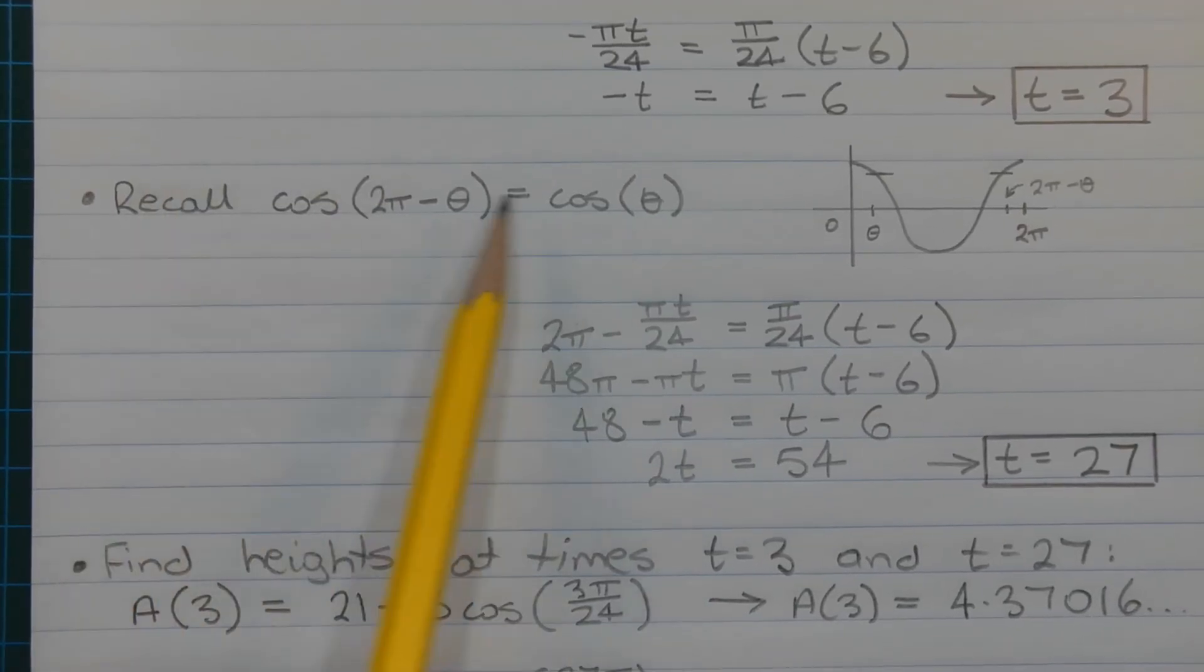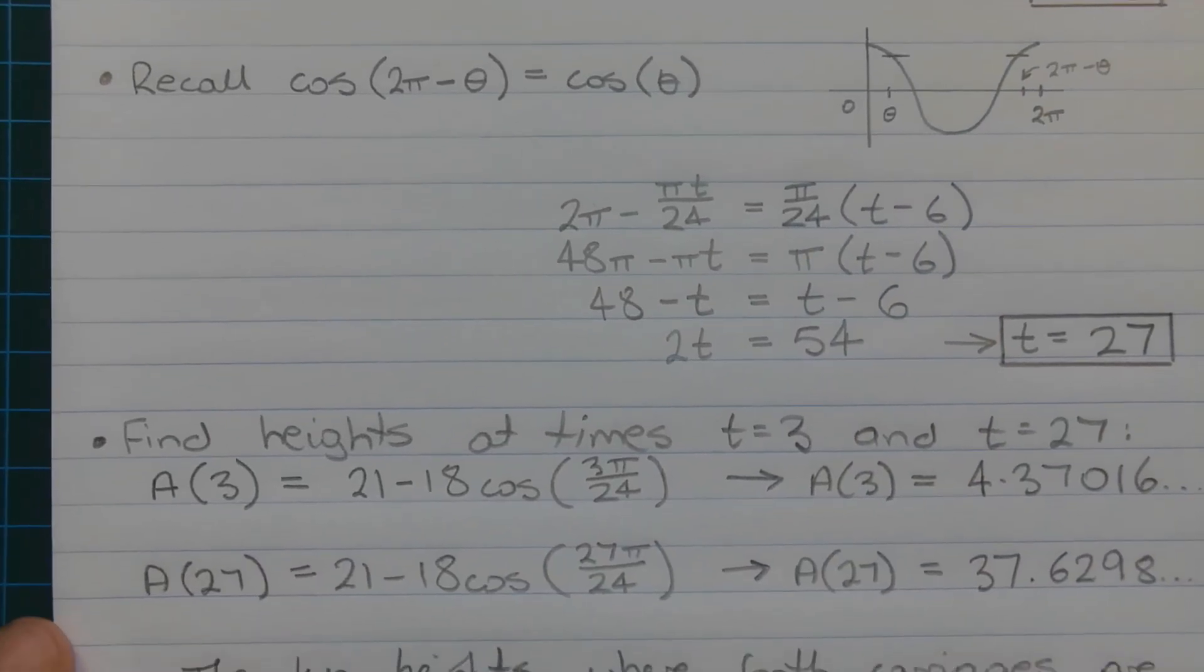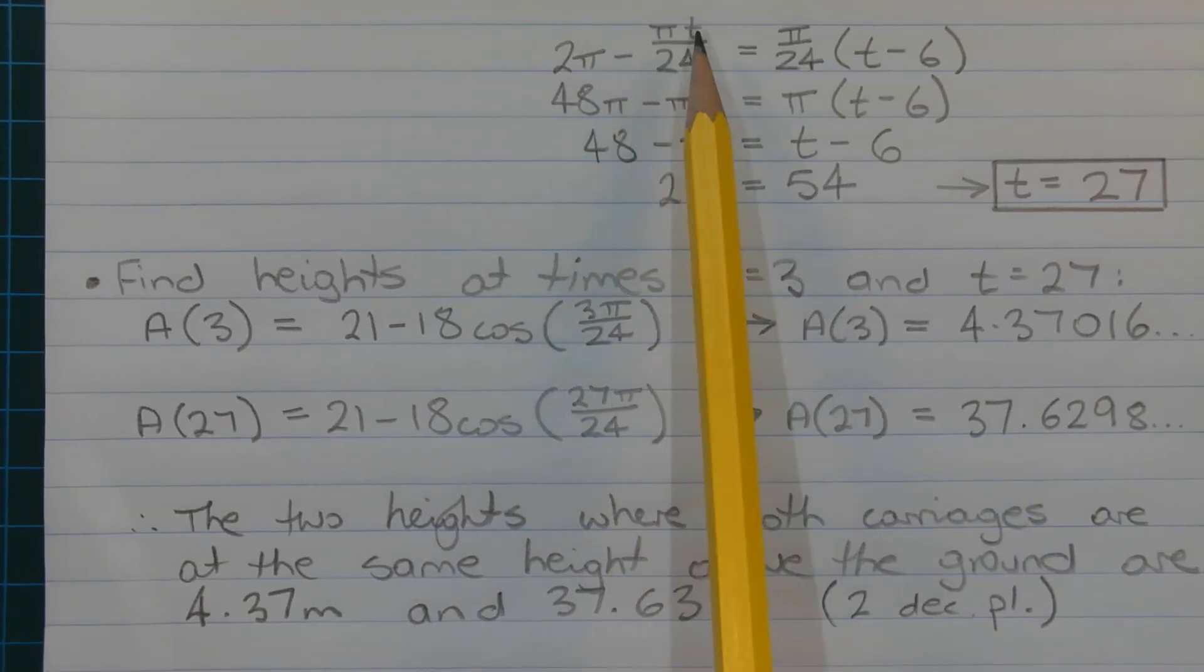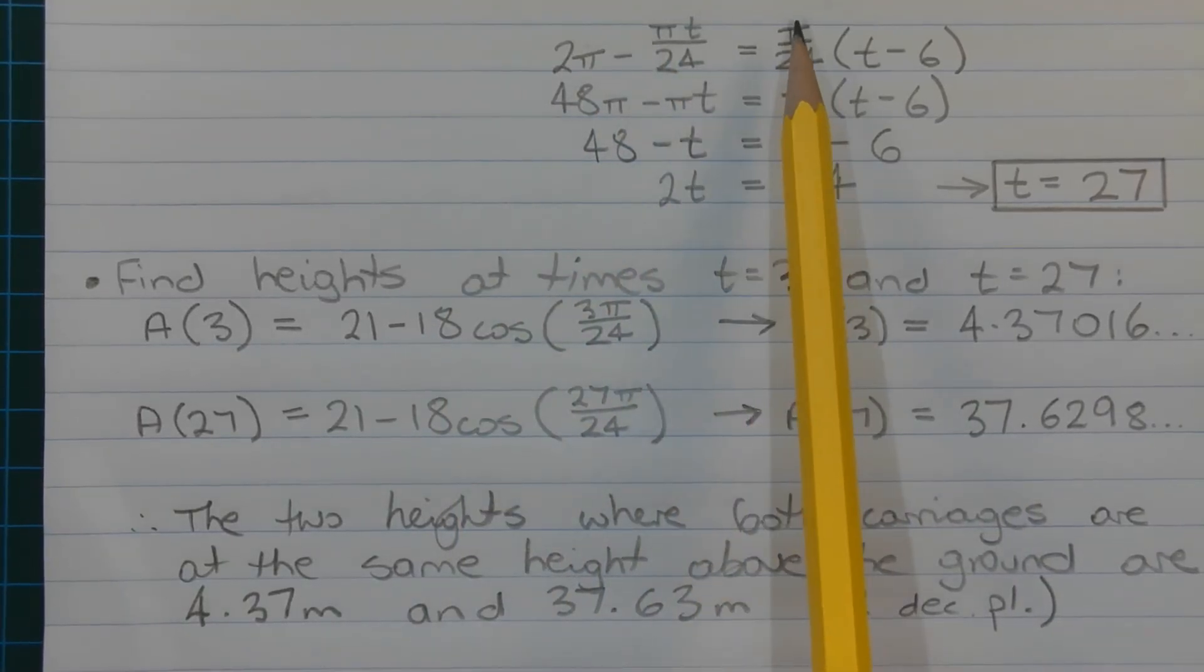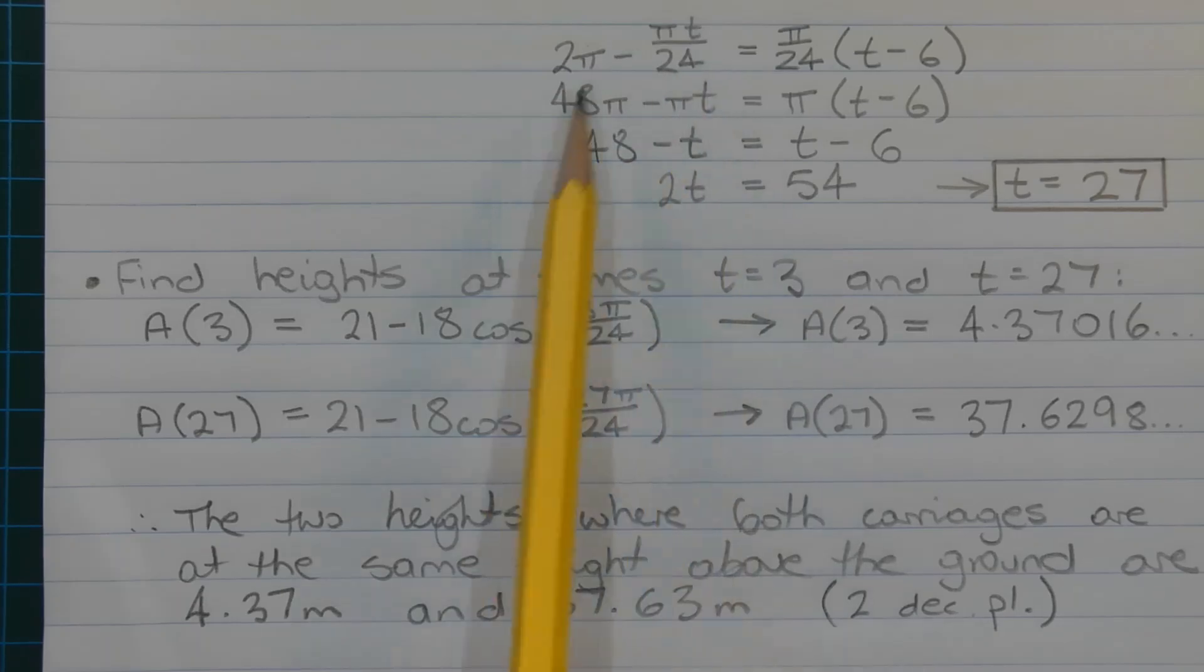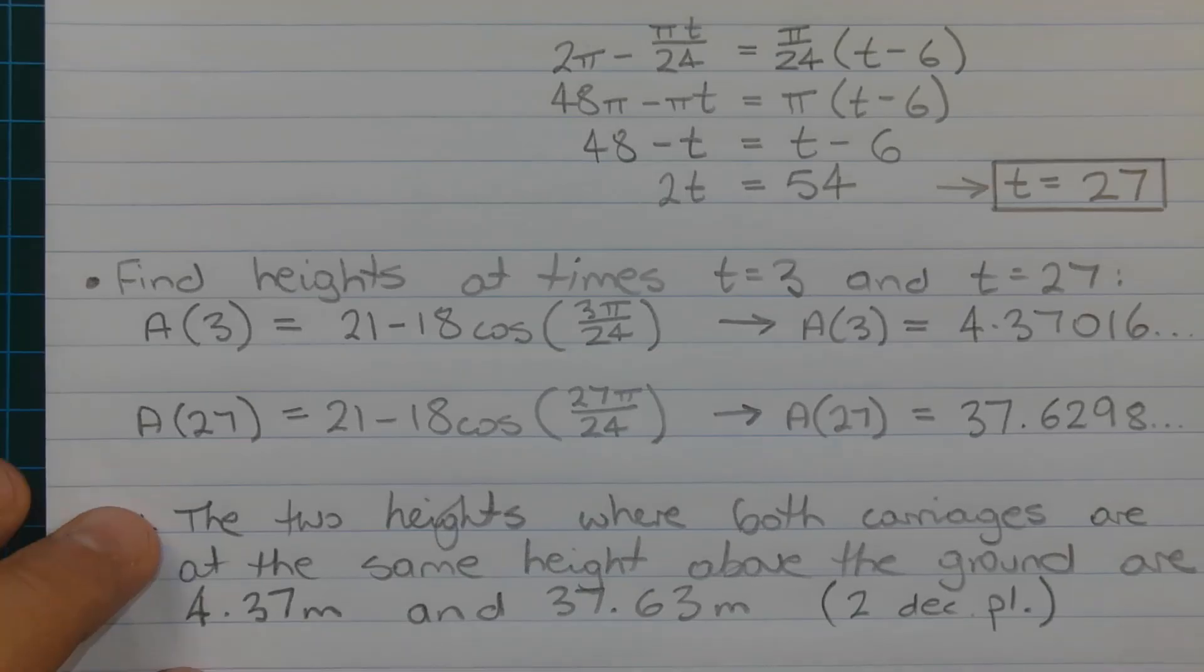Now another property to recall is cos(2π - θ) equals cos(θ). And I've sketched a cosine curve here. So if that's cos(θ) here. If we come back from 2π to the left hand side, you end up at the same two heights. So the equation can be 2π minus πt/24 equals π/24 times (t - 6). Multiplying all terms by the denominator 24, we get 48π minus πt equals π times (t - 6). Dividing all terms by π, we get 48 minus t equals t minus 6. Collecting like terms we get 2t equals 54. So t equals 27. And that's our second solution.